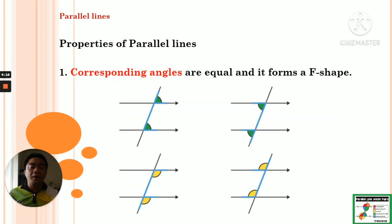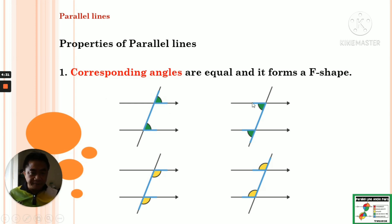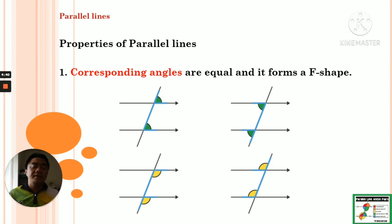Now we have the different properties of parallel lines. First, corresponding angles form an F-shape — you can see with the blue color that it looks like the letter F. As mentioned, one corresponding angle will be on the exterior side and the other will be on the interior side of the parallel lines.